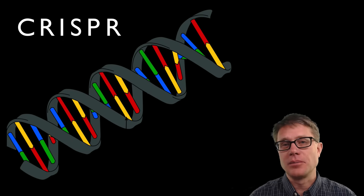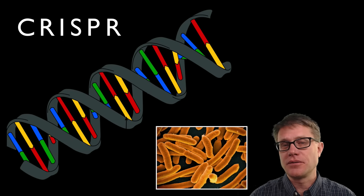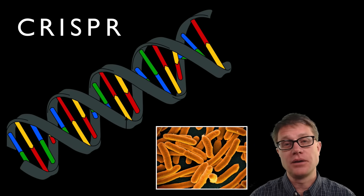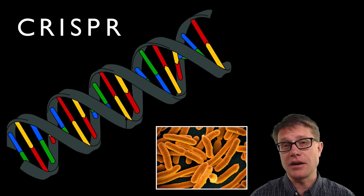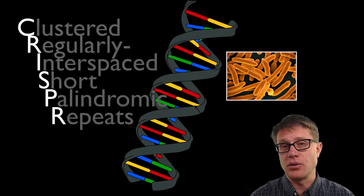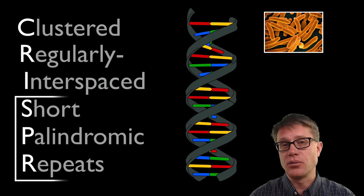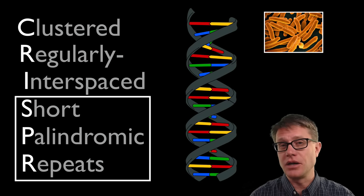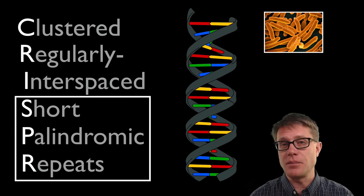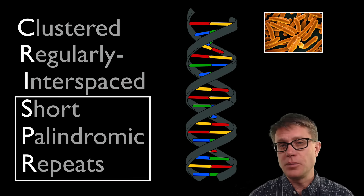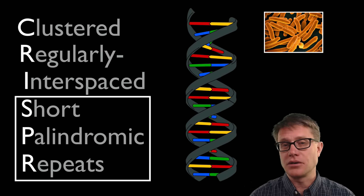Like most things in molecular biology, CRISPR was first identified in E. coli. If we break apart the acronym it stands for Clustered Regularly Interspaced Short Palindromic Repeats. Now that is a mouthful, but it does tell you the two main parts found in CRISPR.